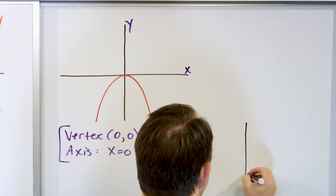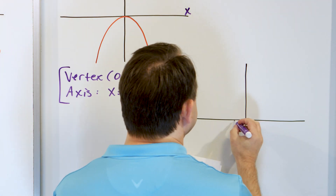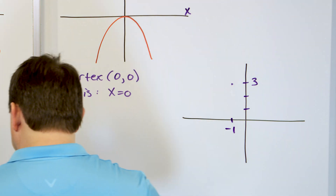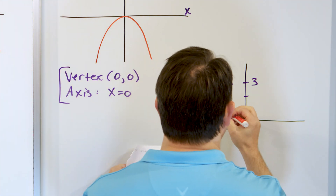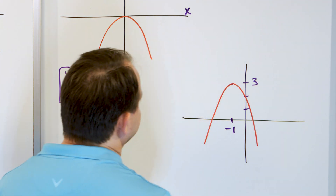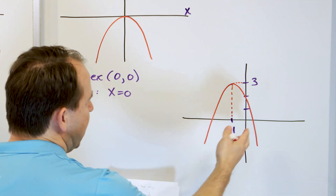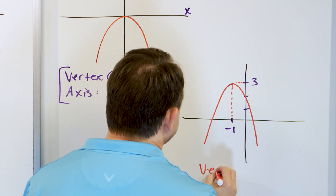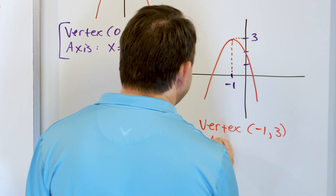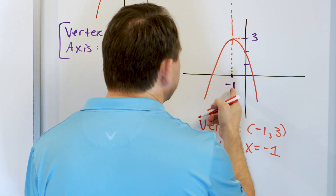Let's do one more. Let's say we have a parabola with negative one on the left, and one, two, three to the right. Our vertex ends up here — this parabola opens upside down. What's the vertex and the axis of symmetry? The vertex is the coordinates of this top point: negative one comma three, that's x comma y. And the axis is going to be the line that bisects this thing, which has to be x = -1 — that's the line that goes through there.